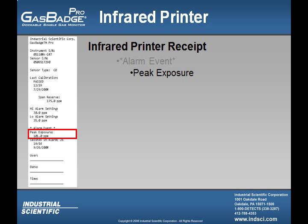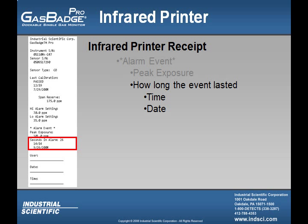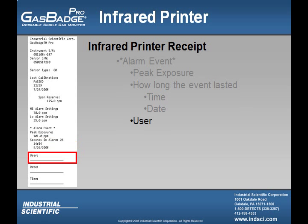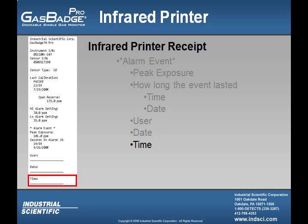The peak exposure line shows the user the highest peak the instrument saw during a particular alarm event. The receipt also shows how long the event lasted, as well as the date and time the alarm occurred. After that, the user can write their name or sign the receipt, verifying who printed it, as well as the date and time the receipt was printed.